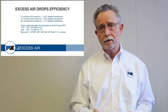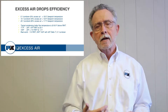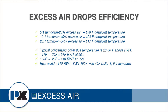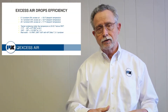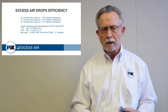On a five to one turndown we're going to use approximately 20 percent excess air, which gives us the highest dew point possible — somewhere between 130 and 135 degrees, depending on the relative humidity of the combustion air. When you go to ten to one turndown you're adding about 40 percent excess air. This drops the dew point down to around 123 degrees. When we go to twenty to one turndown we add 80 percent excess air and the dew point drops further to about 117 degrees before we actually condense.